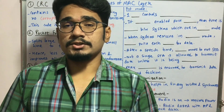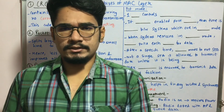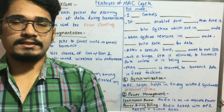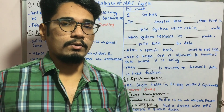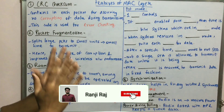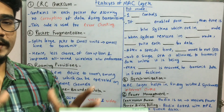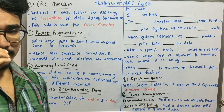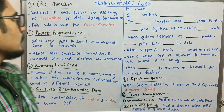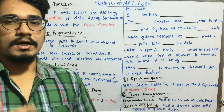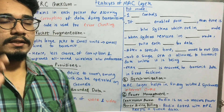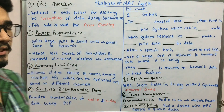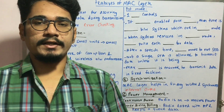We already saw the DSSS packet structure, FHSS packet structure, IR packet structure, and also the MAC packet structure. In all these packet structures we have the checksum or the CRC which is present at the very end before the payload. The very first feature of the MAC layer is CRC checksum — it is present in each and every packet to ensure there is no corruption during data or fragment transmission. It is mainly used for error checking and error detecting purposes.